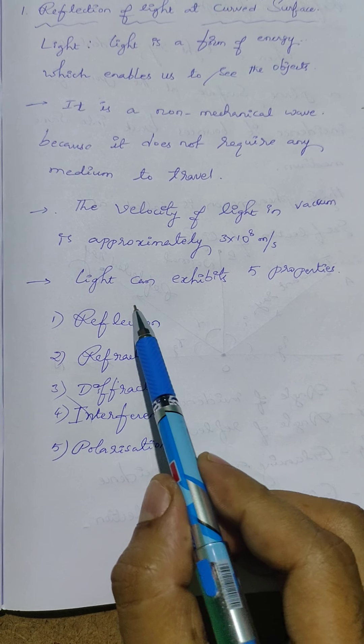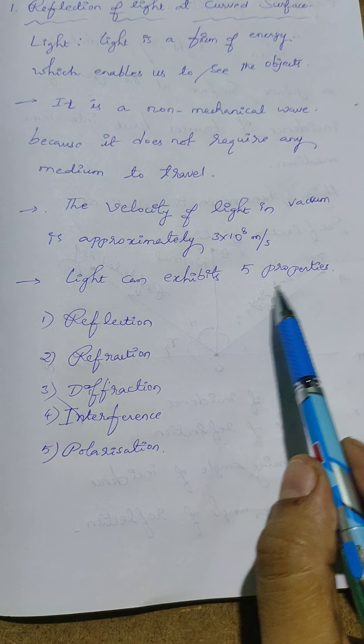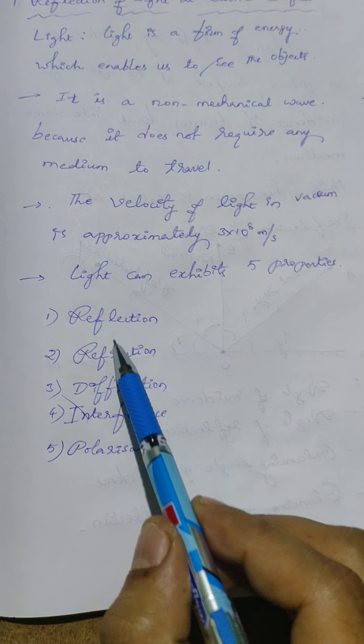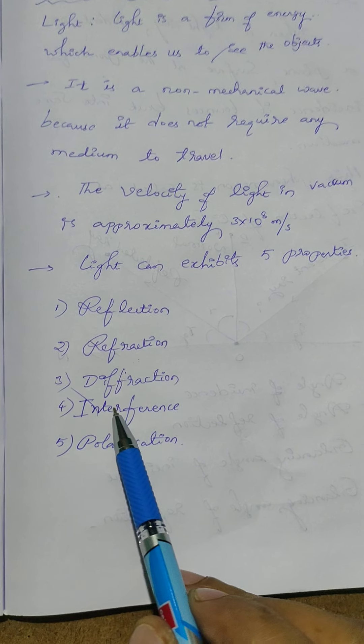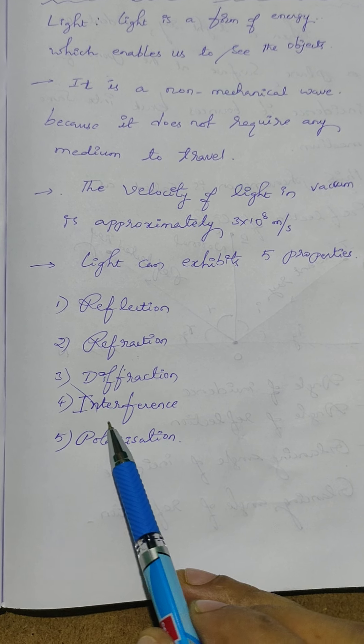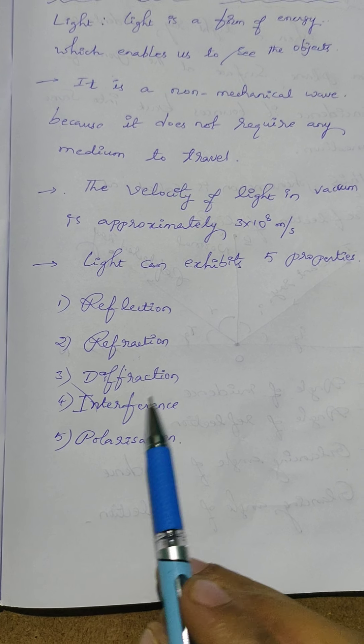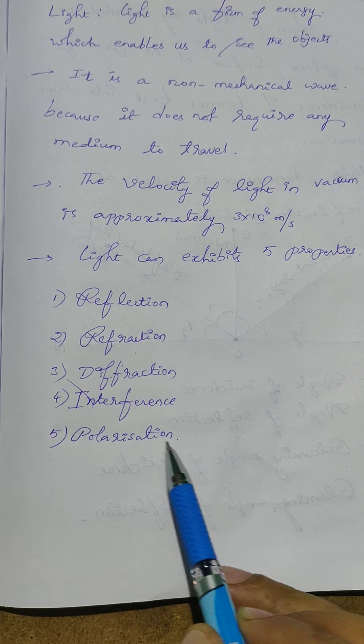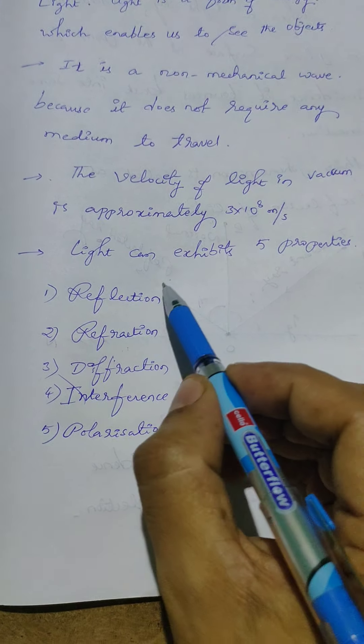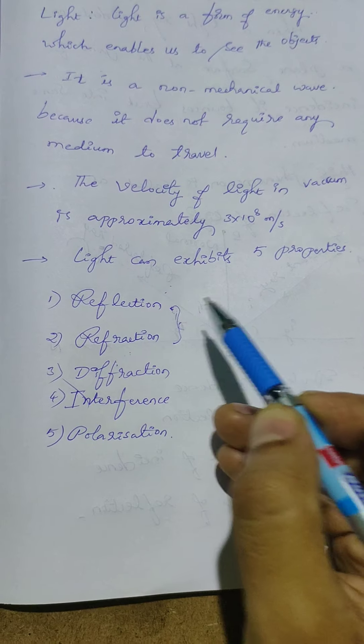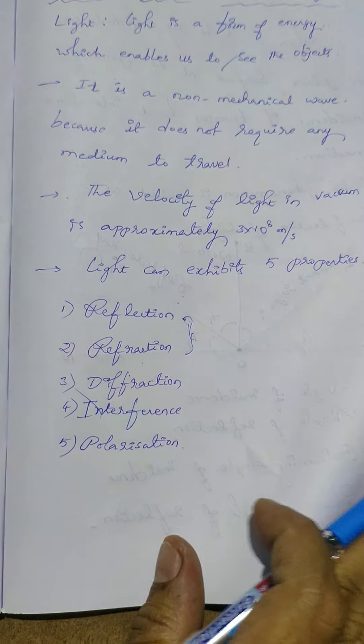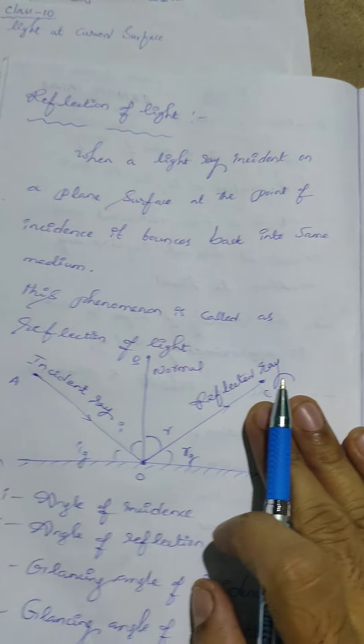Next, light can exhibit five properties: first one reflection, second one refraction, third one diffraction, fourth one interference, and fifth one polarization. So students, mainly we need to concentrate on these two. So first one, reflection.